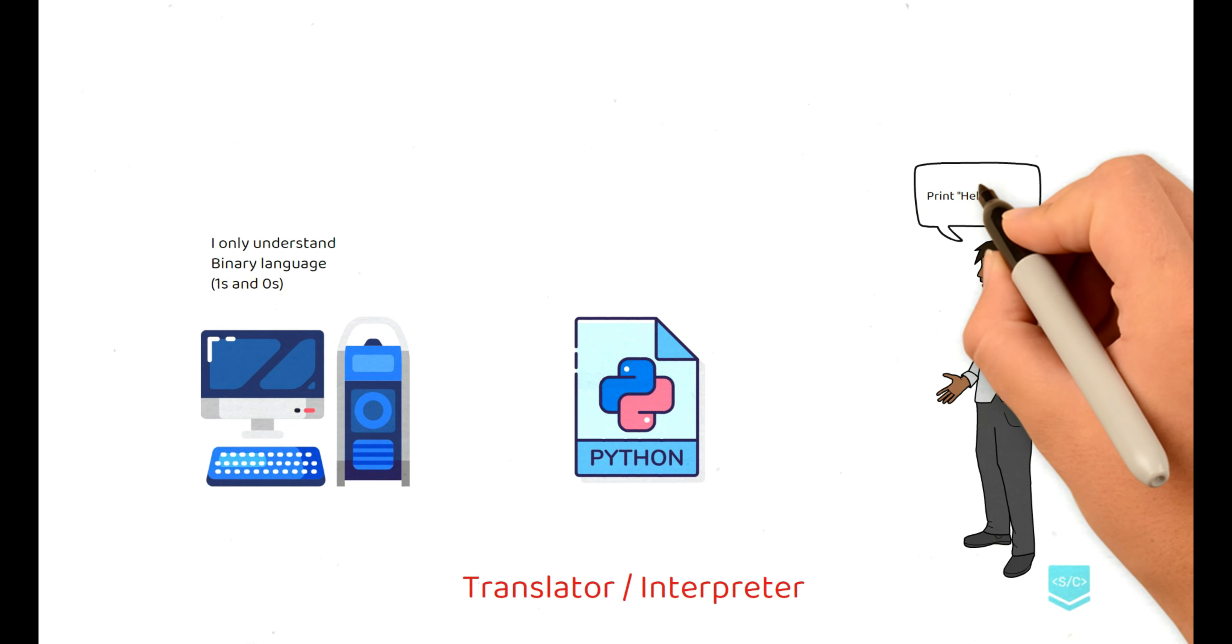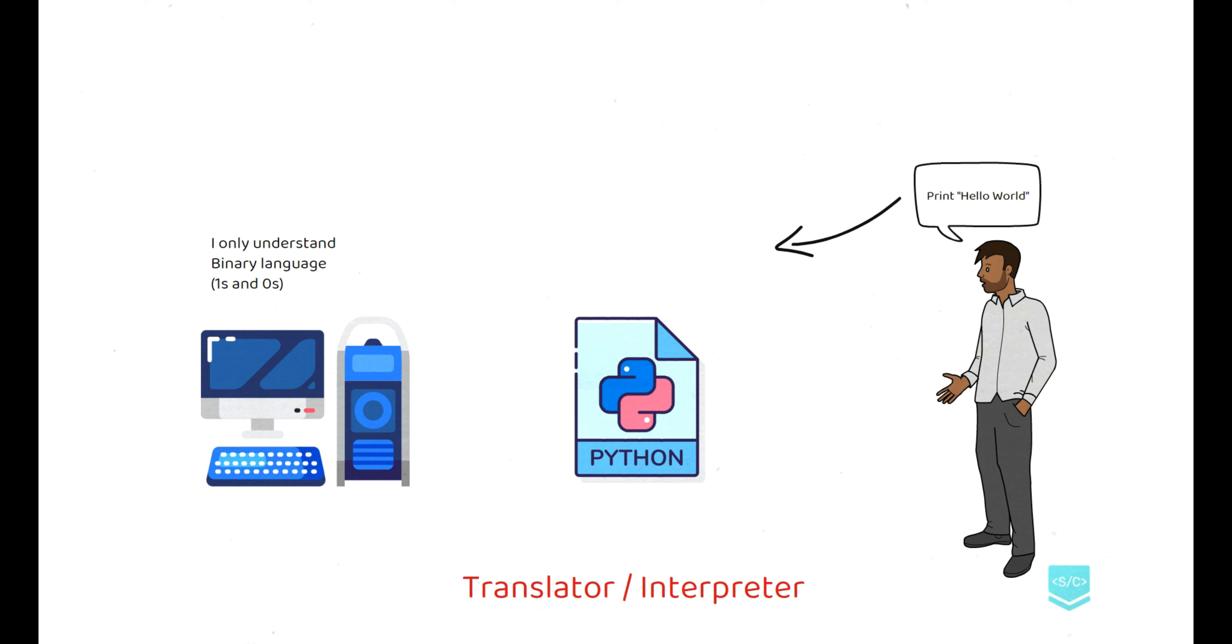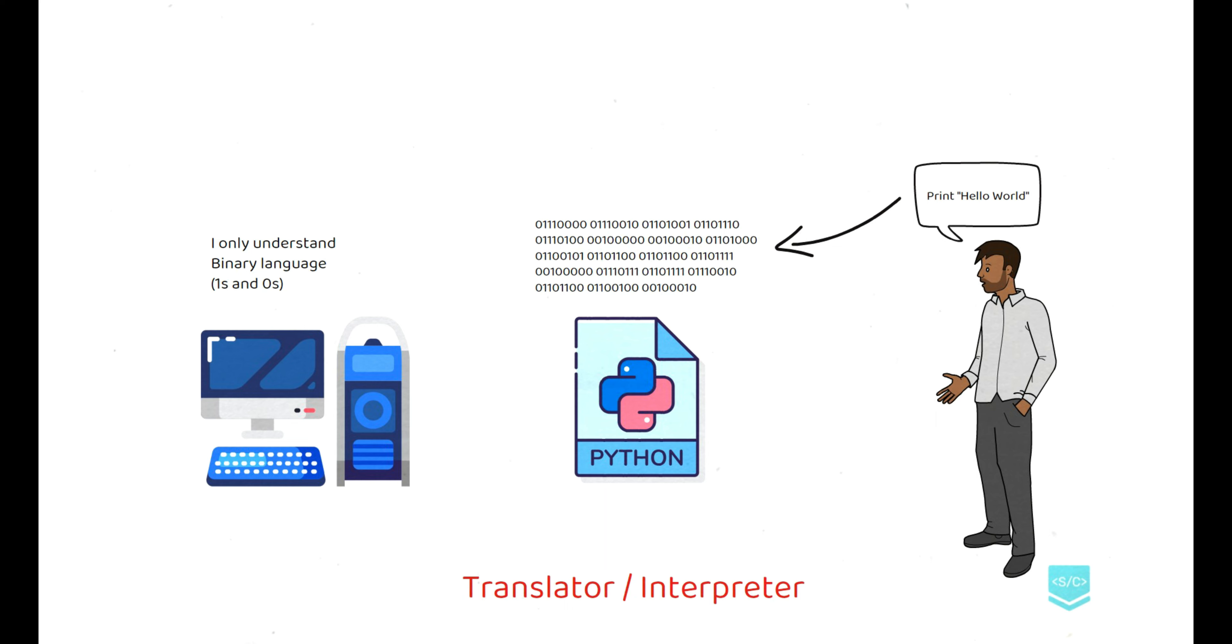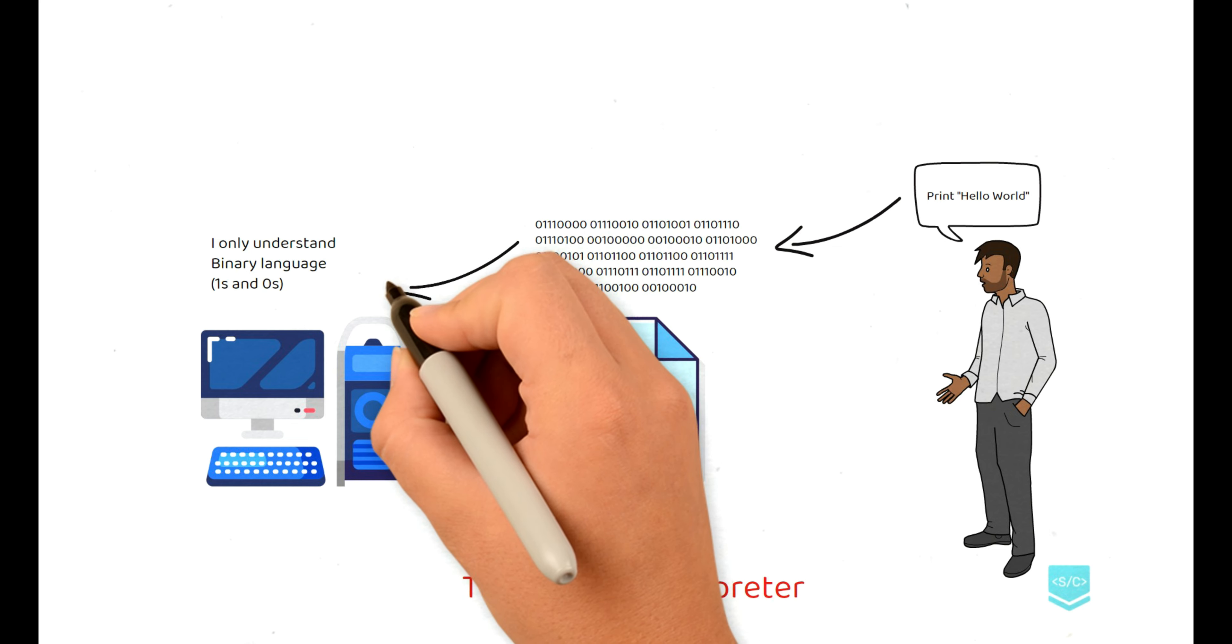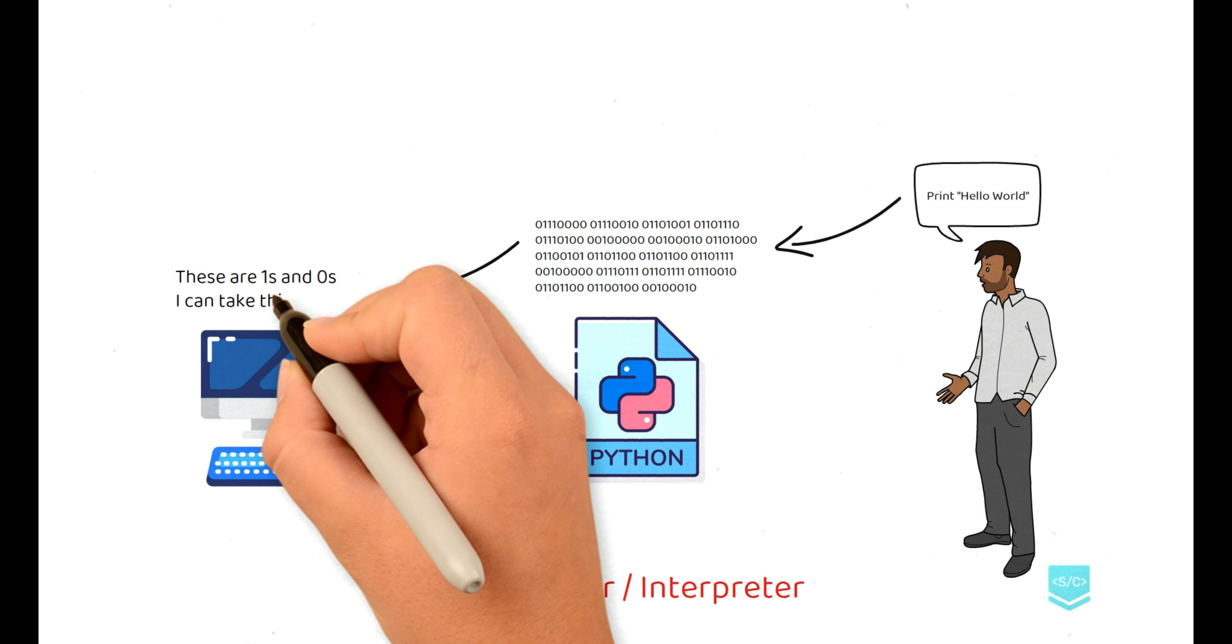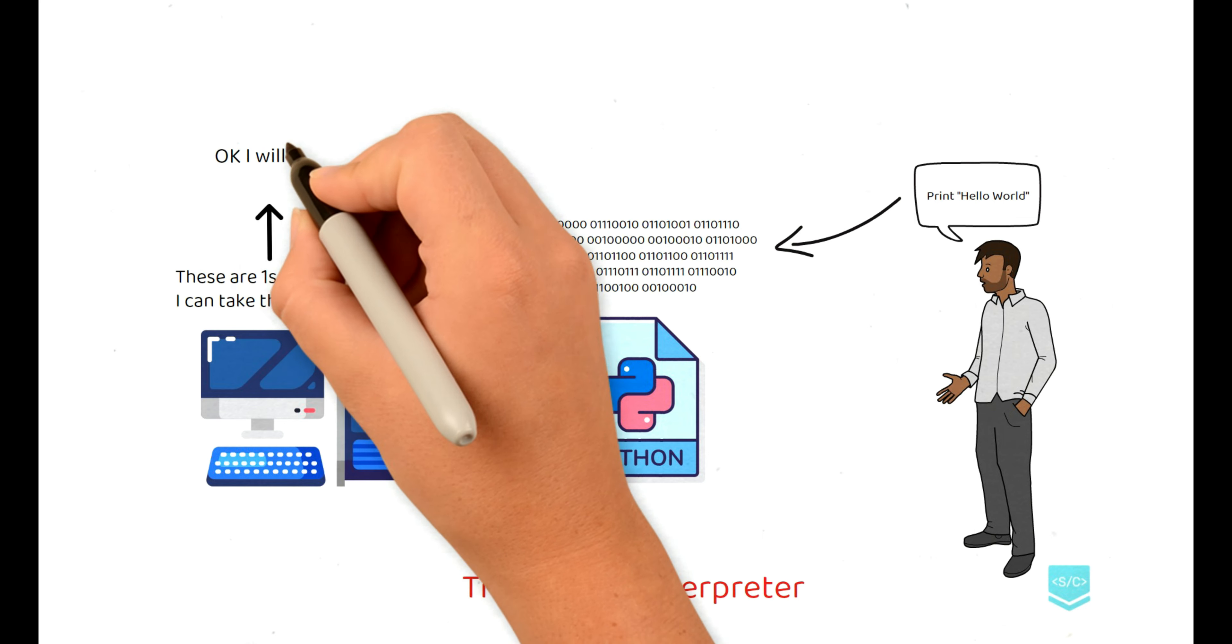When you say print hello world, you're talking in English. The computer does not understand this because the computer wants ones and zeros, which is the binary language. So Python comes in, takes your English text which is print hello world and converts it into a series of ones and zeros and gives it to the computer. The computer knows what you want now because it got the input from Python in ones and zeros, and it will execute it and give you hello world.